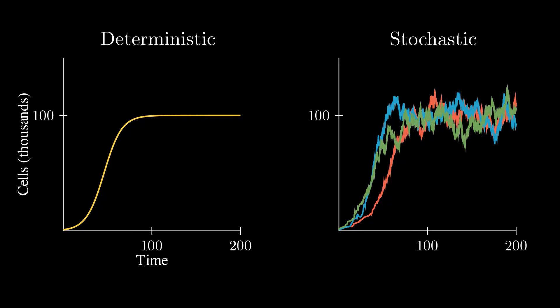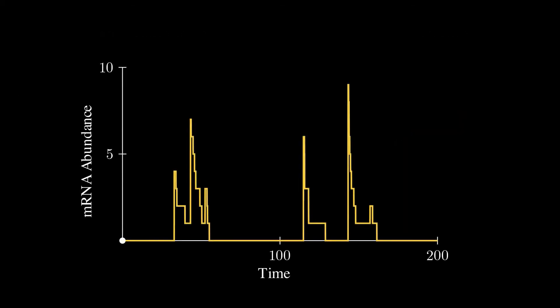For example, there might be times when the randomness in a system is the thing you're trying to study, so you need to use a stochastic model to be able to capture that randomness. So for example, when I was in grad school, one of the topics that my lab was researching was the consequences of randomness in gene expression. In particular, we were interested in the random bursts of mRNA production that happen when a transcription factor binds to the DNA.